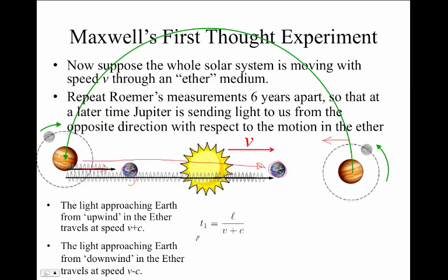The time lag would be L over v plus c when Jupiter is over here sending light to Earth here and here, but would be L over v minus c for this case when Jupiter is on the left side.